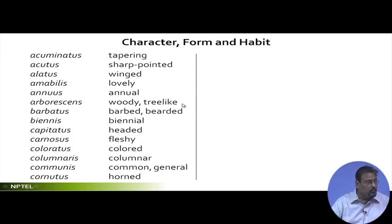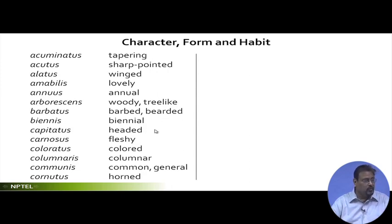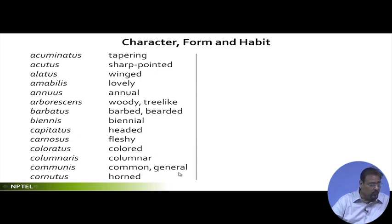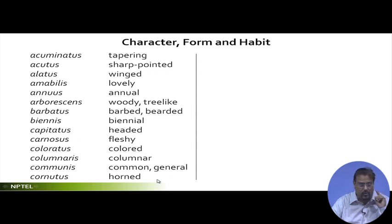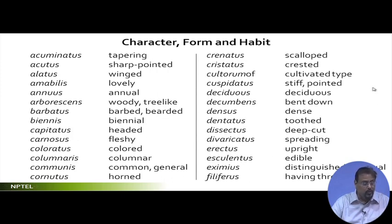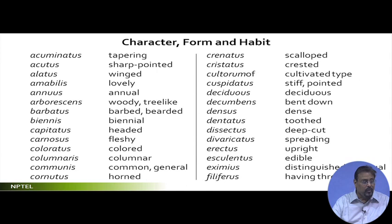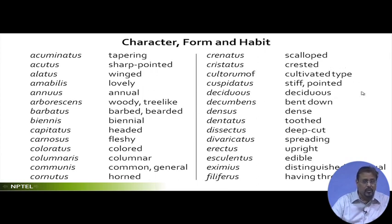Further character terms: floribundus means double-flowered, floridus is flowering, fragilis is fragile, fruticosus is shrubby or bushy, glaber is smooth. For example, Pongamia glabra — the karanj tree — is a large tree where glabra means smooth. If you take a leaf and look at it, it is so shiny and smooth. So the scientist gave it the name Pongamia glabra.